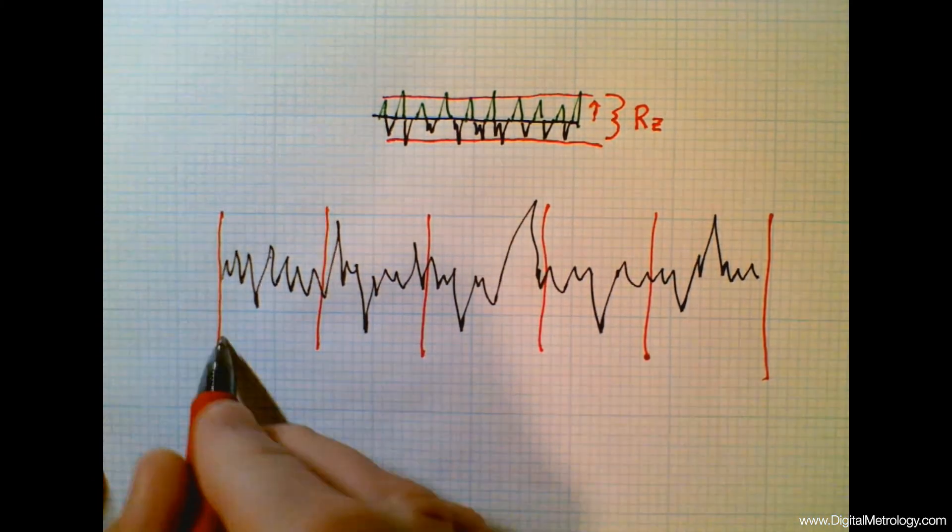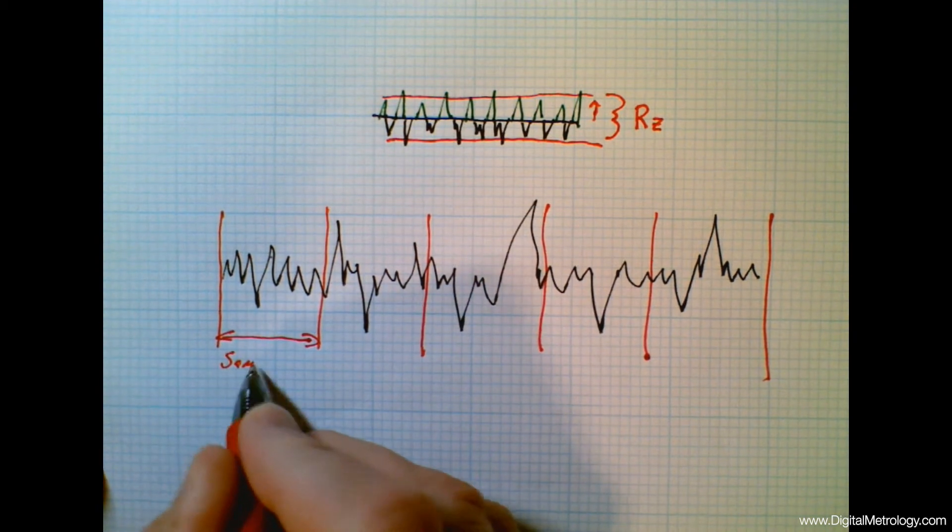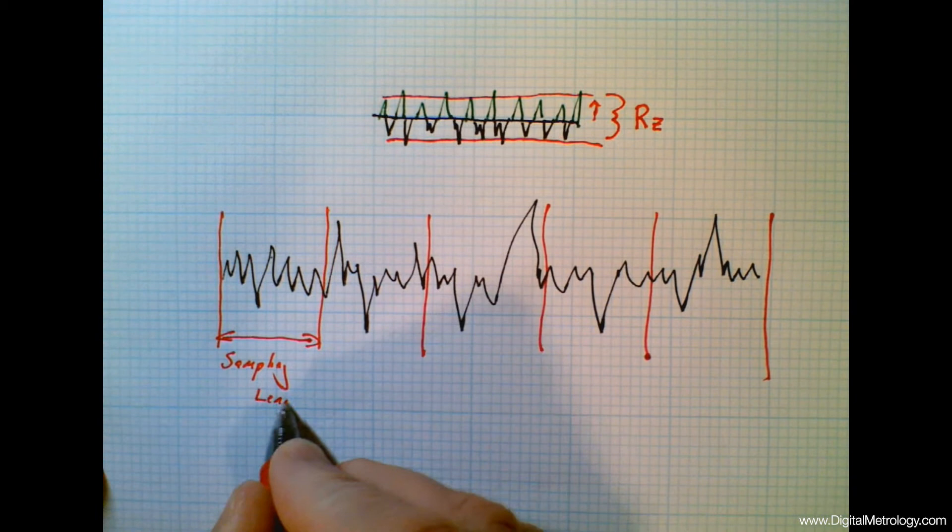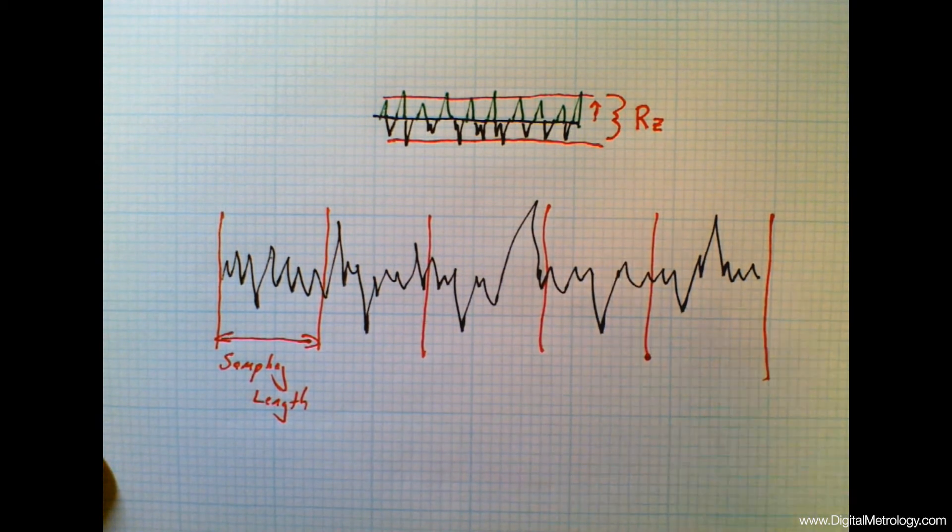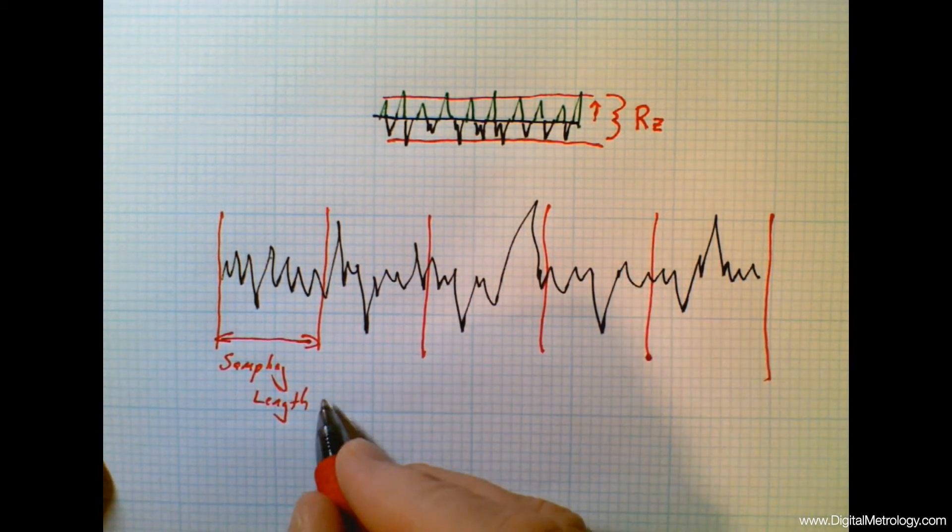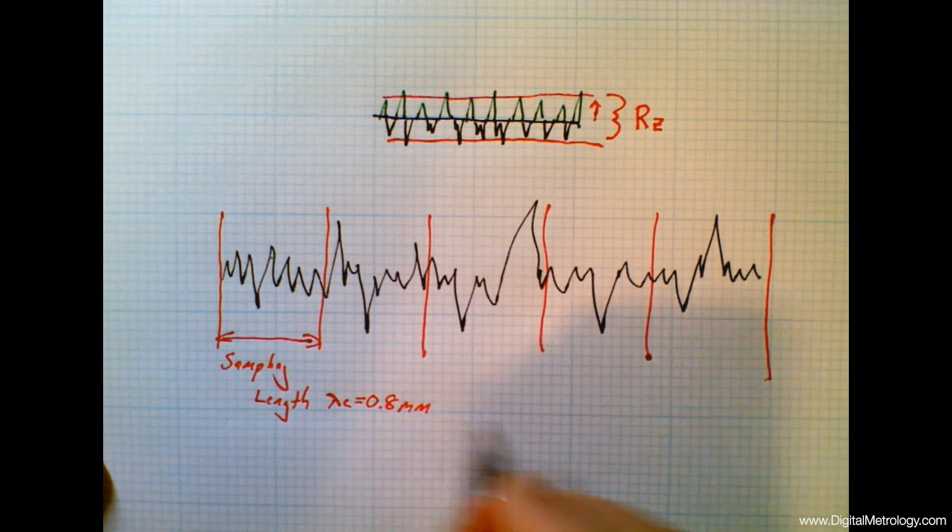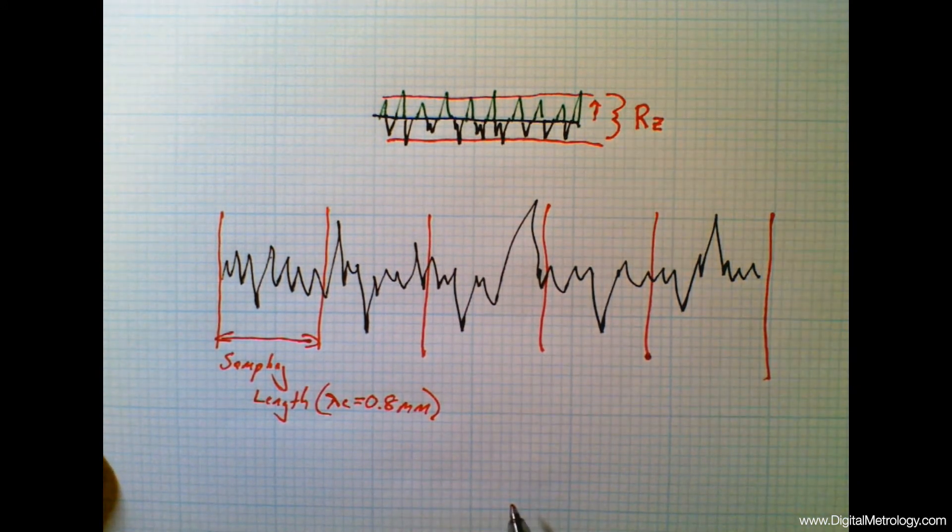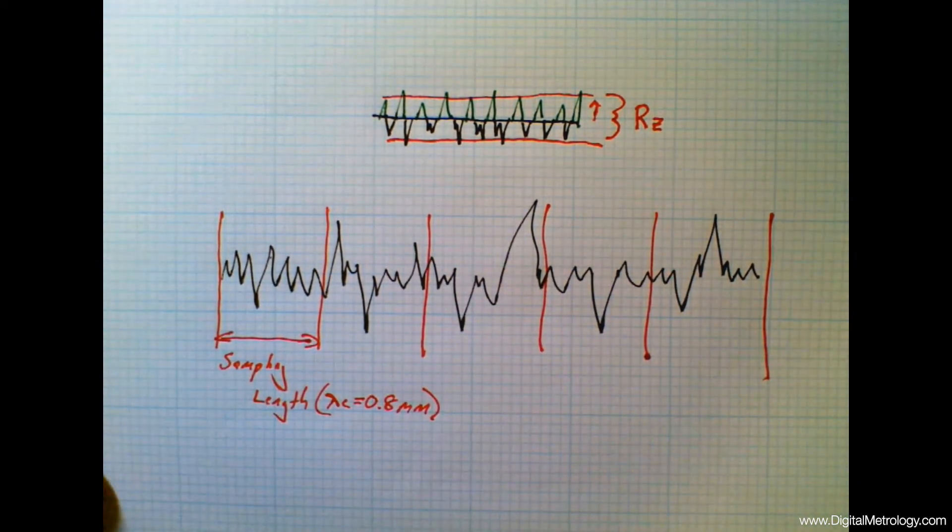So here's a piece of the data and we're going to call this piece a sampling length. We're sampling the profile into little small profiles and each small profile is some length. For ease of use we set that length to be the filter cutoff wavelength where roughness meets waviness. So for example, if we use the 0.8 millimeter filter we'll use that same 0.8 millimeter number as our sampling length.